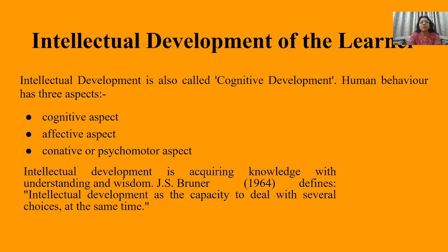Human behavior can be found in three aspects: the cognitive aspect, which means mental development; then the affective aspect, which means emotional development; and the conative and psychomotor aspect. So we have studied this when we study Bloom's Taxonomy and Dimensions — cognitive, affective, and psychomotor domains.